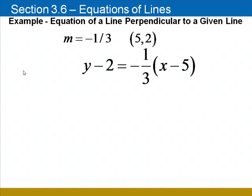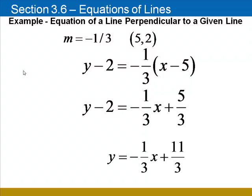Substitute into the point slope form: 2 for y1, negative 1/3 for the slope, 5 for x1. Distribute negative 1/3 on the right hand side, and we'll finish by adding 2 to both sides. Keep in mind that 2 is the same as 6/3, and when added to 5/3, we get 11/3. The equation of the line is y equals negative 1/3 x plus 11/3.